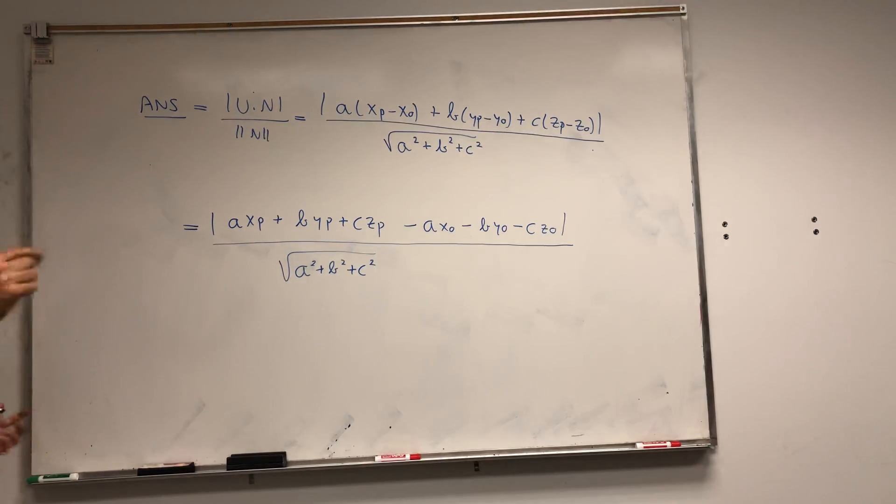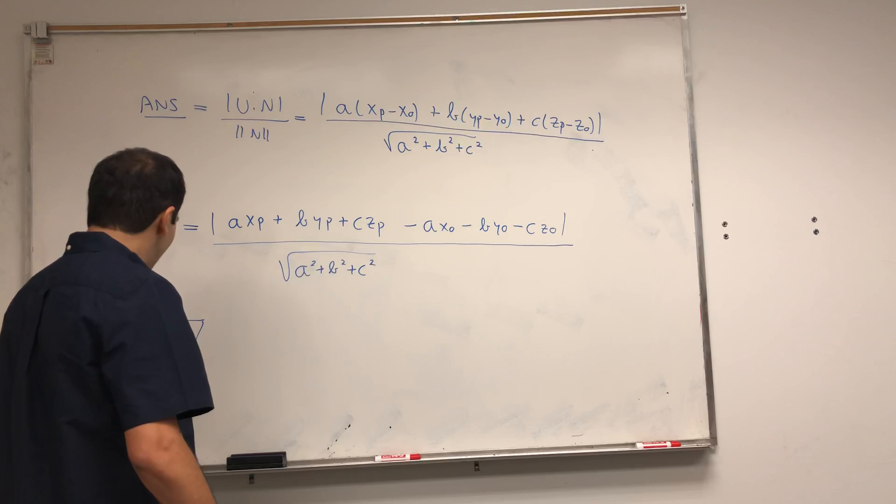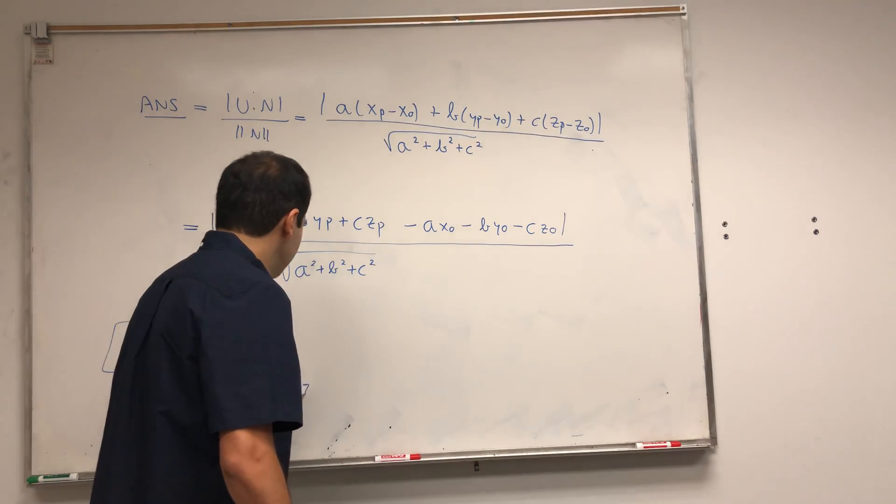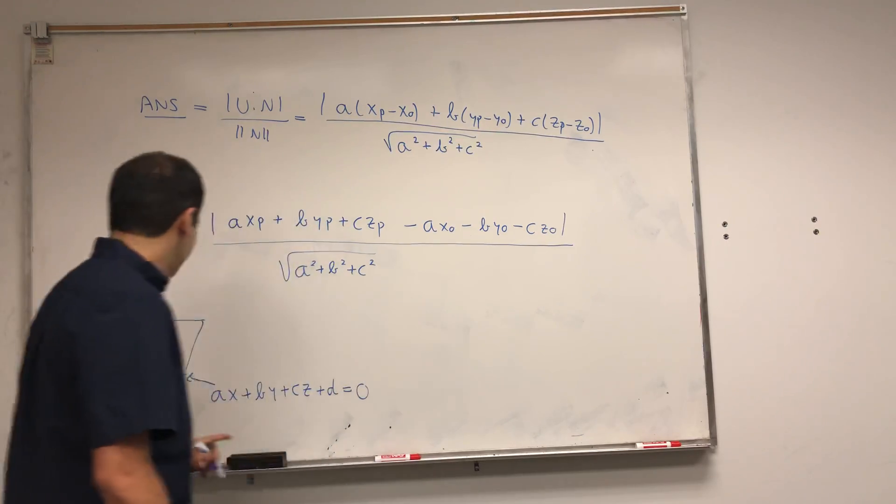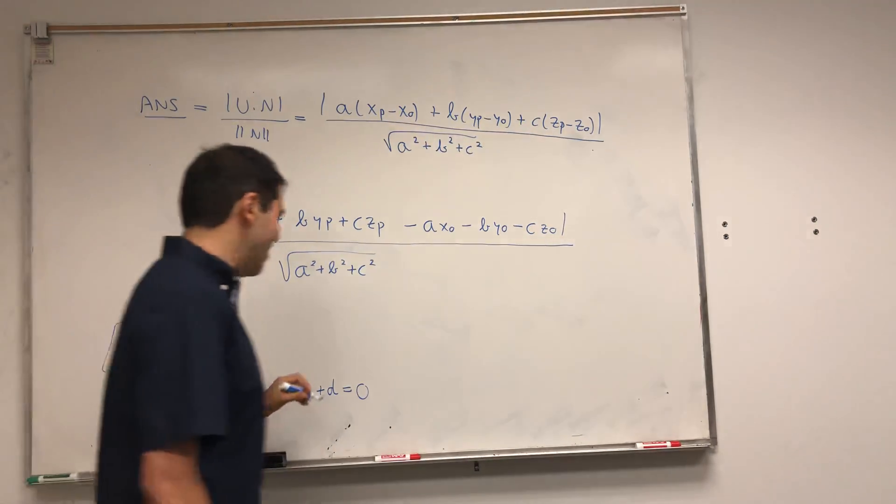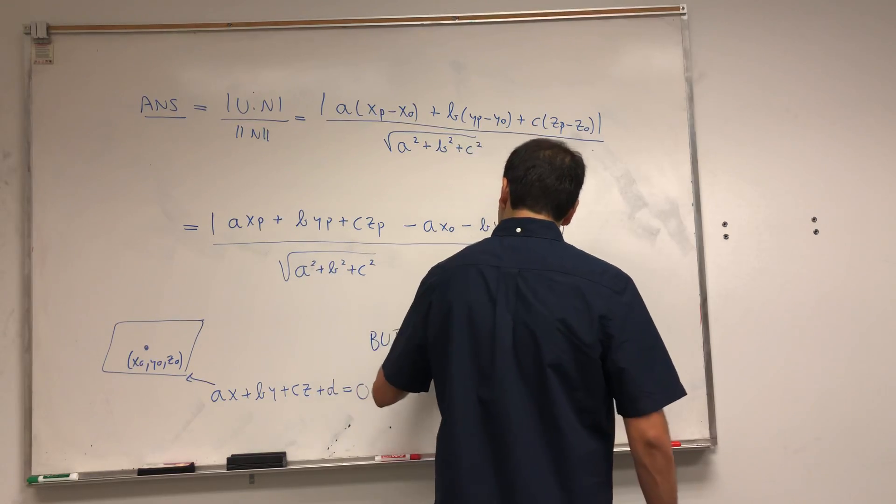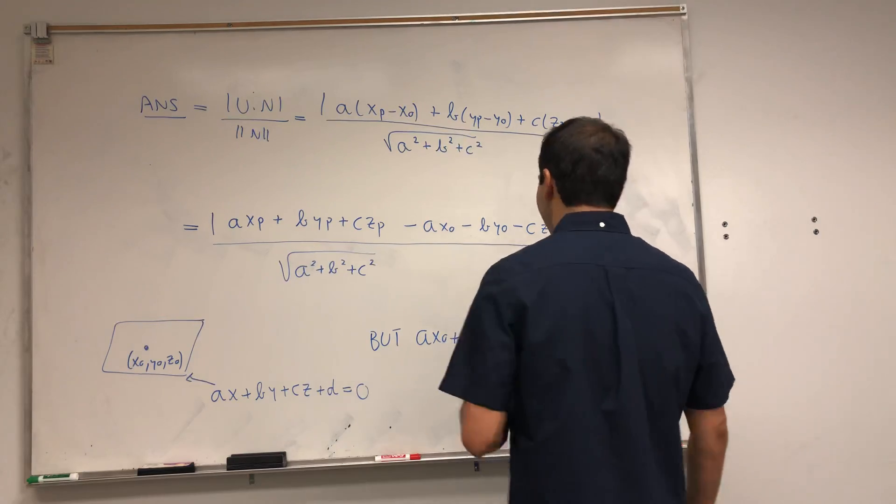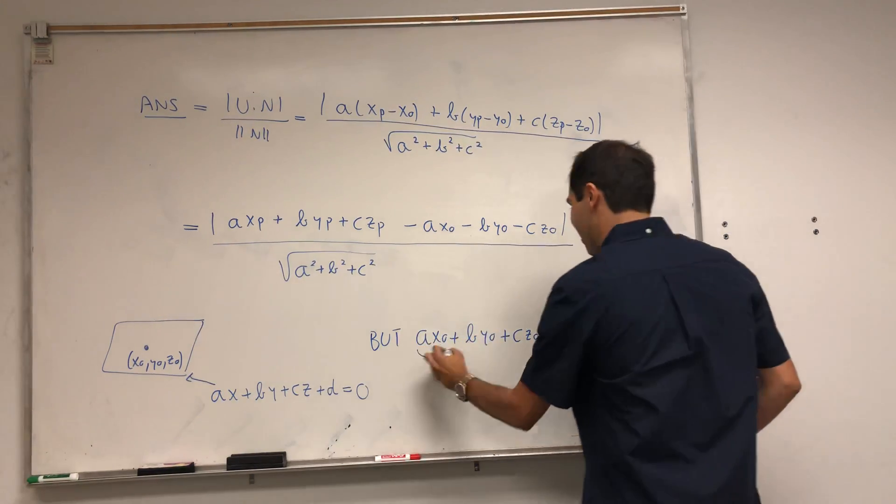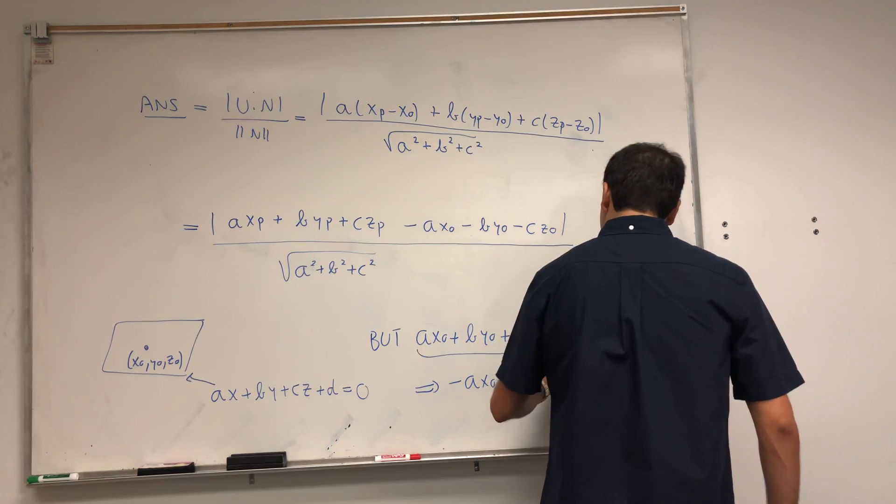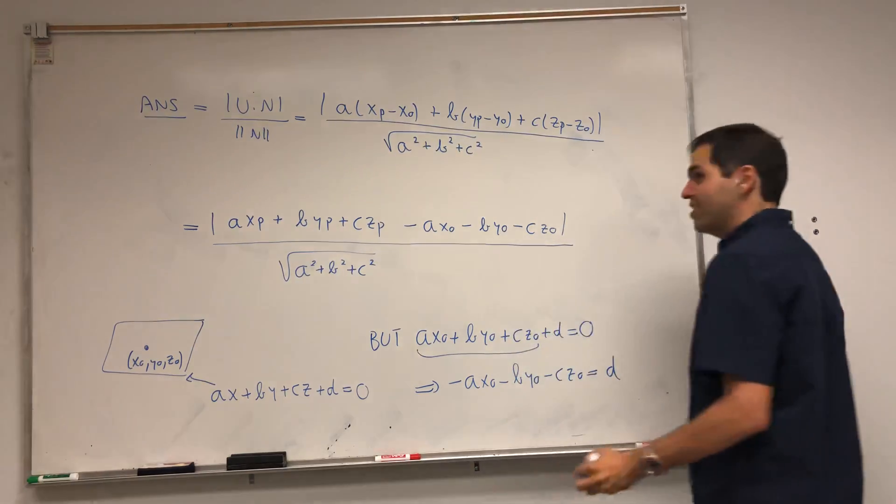Now remember what this (x₀, y₀, z₀) was—it was a random point on the plane. Remember the plane had the equation Ax + By + Cz + D = 0. Because it's on the plane, it satisfies the equation of the plane: Ax₀ + By₀ + Cz₀ + D = 0. What does that tell you? Putting this on the right-hand side, we get -Ax₀ - By₀ - Cz₀ is actually just equal to D.